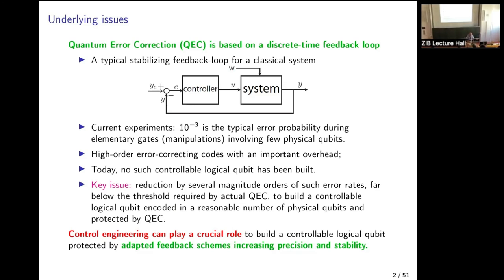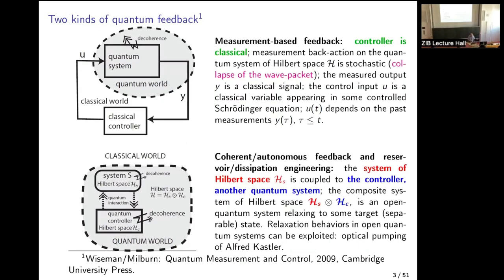Typical feedback is something adapted to increase both precision and robustness — something very classical in control engineering. When you look at quantum systems, you have two kinds of feedback. Either you use a classical feedback loop, where your system is a quantum system and the perturbation corresponds to decoherence. You have quantum measurement, but at the end you obtain some classical signal, and you have drives — amplitude and phase — or laser or microwave pulses.